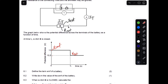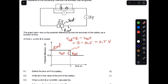The difference between the EMF and V external is V internal. So the difference between 13 and 10.5 gives us V internal. Our V internal is 13 minus 10.5, which equals 2.5 volts. So 2.5 volts is the V internal, also called the voltage lost.